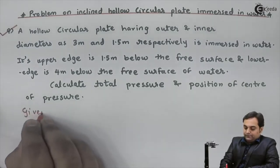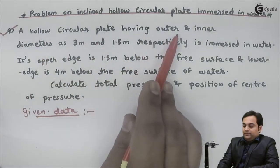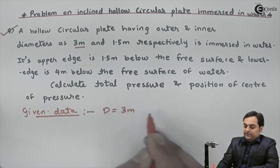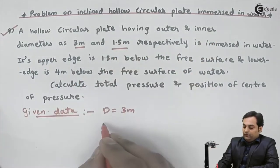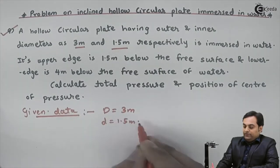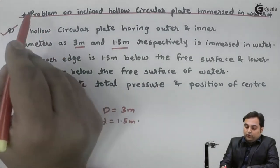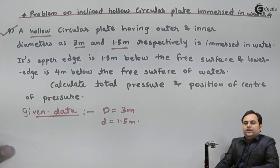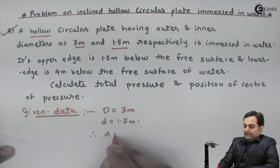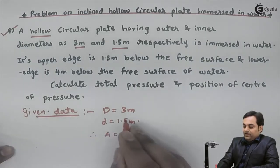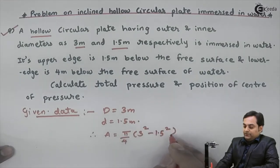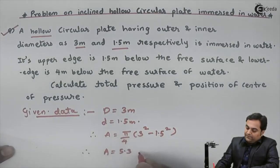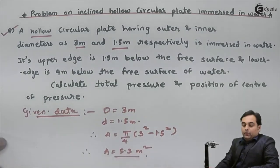From the given data: the outer diameter D is 3 meters and the inner diameter d is 1.5 meters. Since this is a hollow circular plate, we can calculate its area as A = π/4 × (D² - d²), which gives the area as 5.3 square meters.